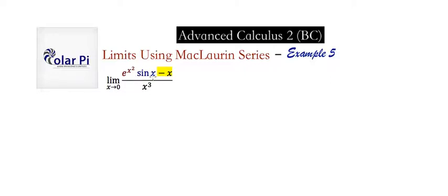In this example, this is what we have to deal with, and if we evaluate the limit as x goes to zero, this is what we're going to get, which is zero over zero.